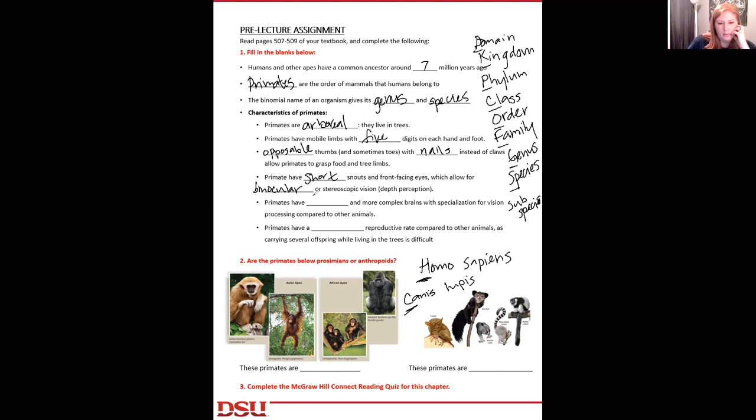Primates have short snouts and front facing eyes, which allow for binocular or stereoscopic vision. It gives us depth perception versus being like prey that have their eyes on the side of their heads. Primates have larger, more complex brains to process vision. Primates have a reduced reproductive rate compared to other animals. It's thought this was an evolutionary advantage because it would be hard to move multiple offspring from tree to tree.